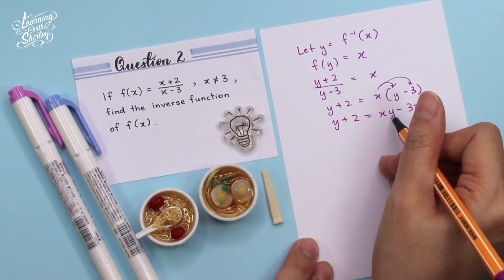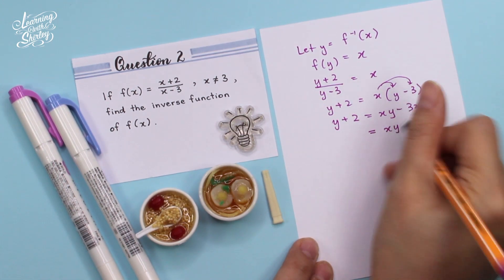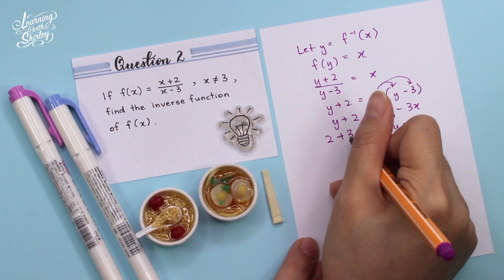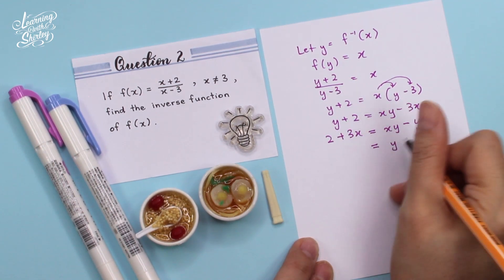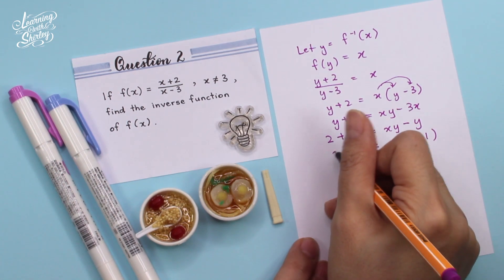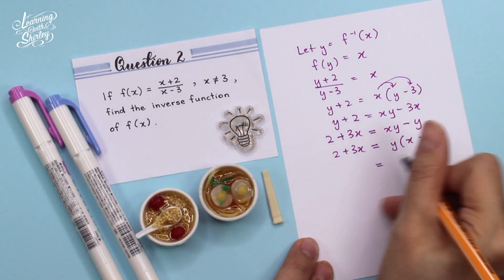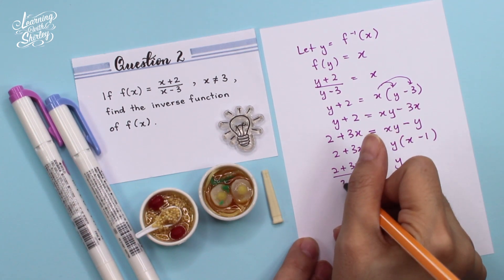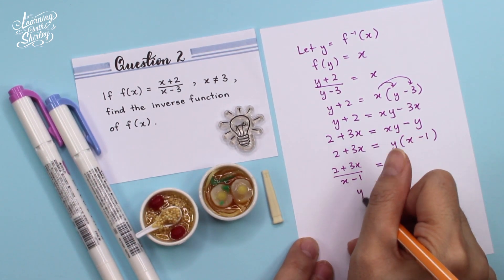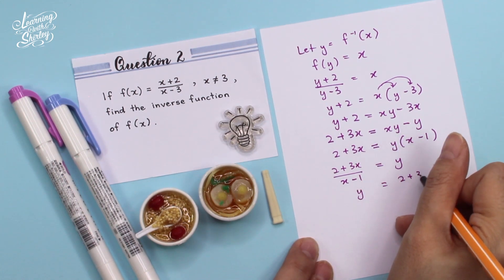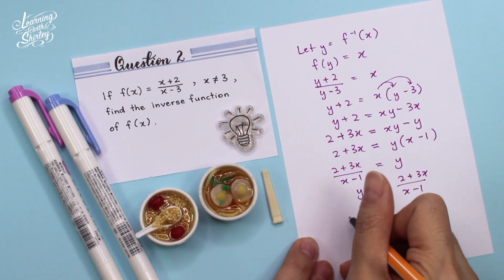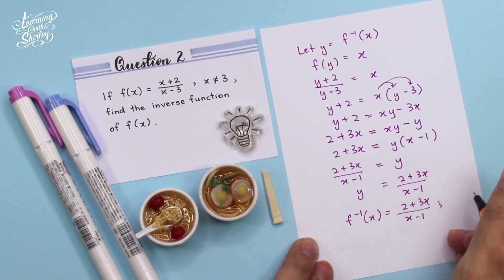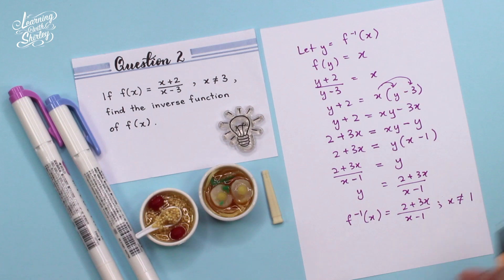We group the terms with y to one side: xy minus y, then bring down the 2, and shift negative 3x to the left-hand side to become plus 3x. Next, we factorize the y, so it becomes y(x minus 1) equals 2 plus 3x. We shift over to make y the subject: y equals (2 plus 3x) over (x minus 1). Therefore, f⁻¹(x) is equal to (2 plus 3x) over (x minus 1), whereby x is not equal to 1. That's the final answer.